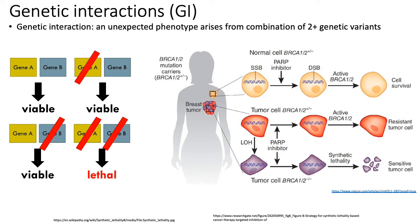The next kind of interaction network we'll talk about are genetic interactions. A genetic interaction between a pair of genes is defined to occur when the phenotype you get when you mutate both genes is unexpected based on the phenotypes you see if you mutate either gene individually.